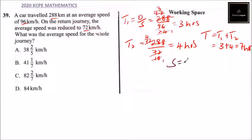Average speed is equal to distance over time. What is distance? Distance is 288 plus 288, divided by time which is 7.